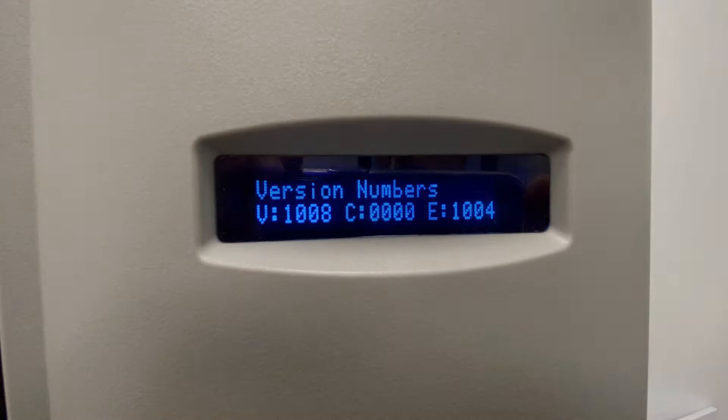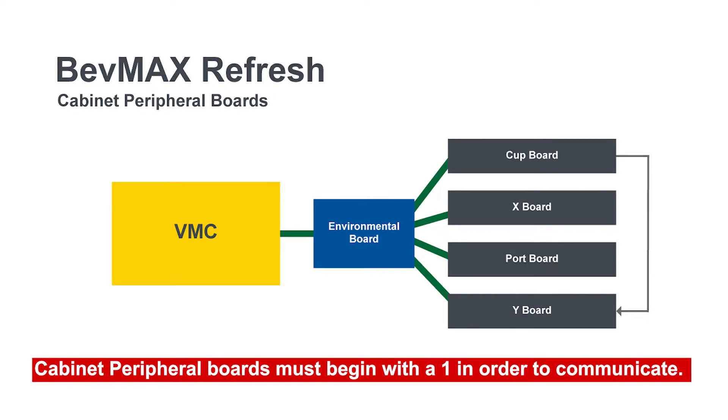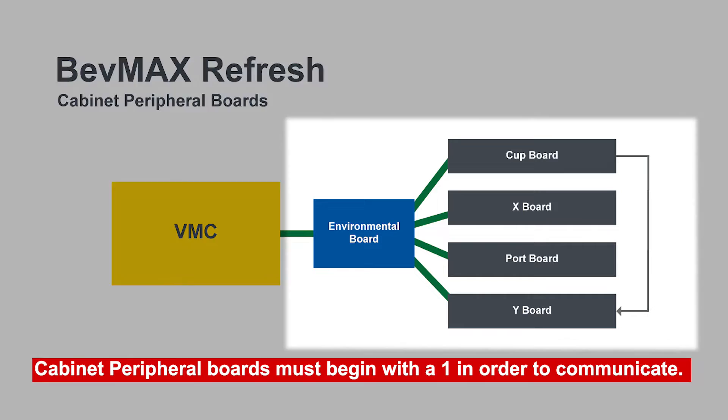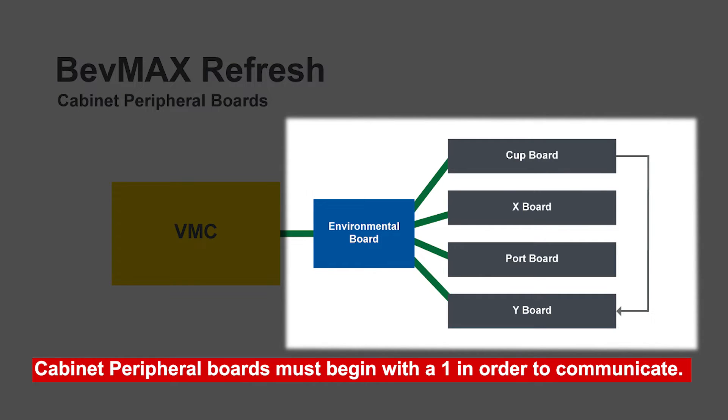Just for reference, the V — Vending Machine Control Board — will always begin with a 1 whether I have an issue with the board or not, because that is the software release. On the other boards, the cabinet peripheral boards, they have to begin with a 1 in order to communicate.